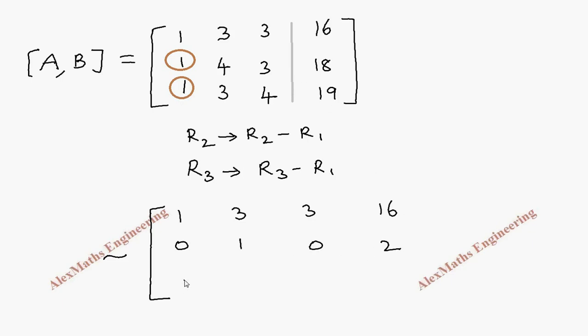Similarly, 1 minus 1 is 0. 3 minus 3 is 0. 4 minus 3 is 1. 19 minus 16, which is 3.